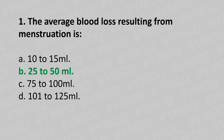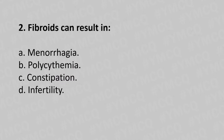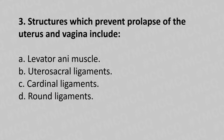Question 2: Fibroids can result in — option A: menorrhagia, option B: polycythemia, option C: constipation, option D: infertility. The answer is option D: infertility.